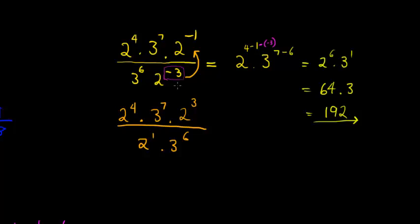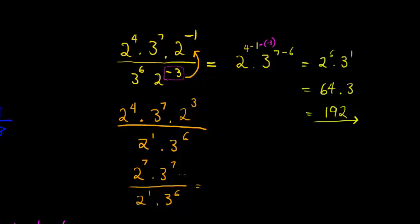Continuing with the alternative method: 2 to the power of 4 times 2 to the power of 3 gives 2 to the power of 7 in the numerator, times 3 to the power of 7, divided by 2 to the power of 1 times 3 to the power of 6. Now I can say it's 2 to the power of 7 minus 1 = 6, and 3 to the power of 7 minus 6 = 1. This gives the same result — 2 to the power of 6 times 3 to the power of 1 = 192.